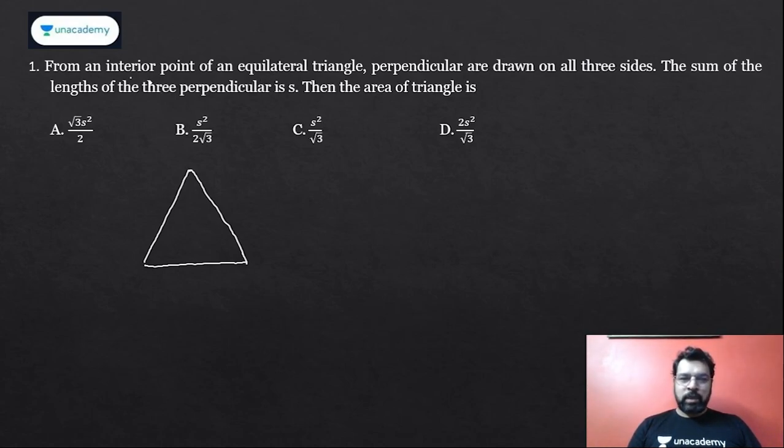So why don't we simply assume the easiest one? That is the centroid. You can say it's the circumcenter also, incenter, orthocenter, because in the equilateral triangle everything is same. So when you drop perpendicular on this, when it is an incenter it is nothing but the inradius.